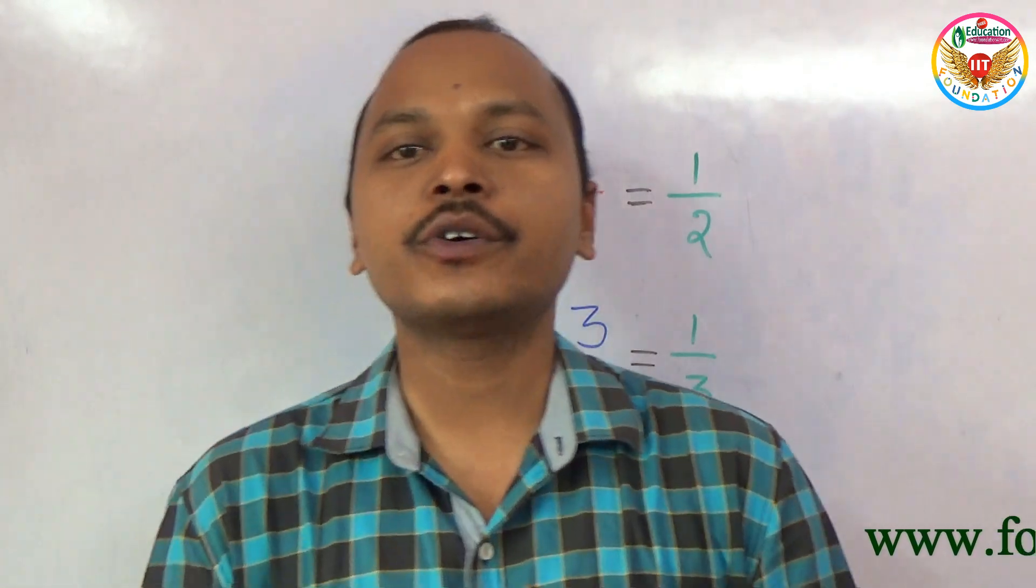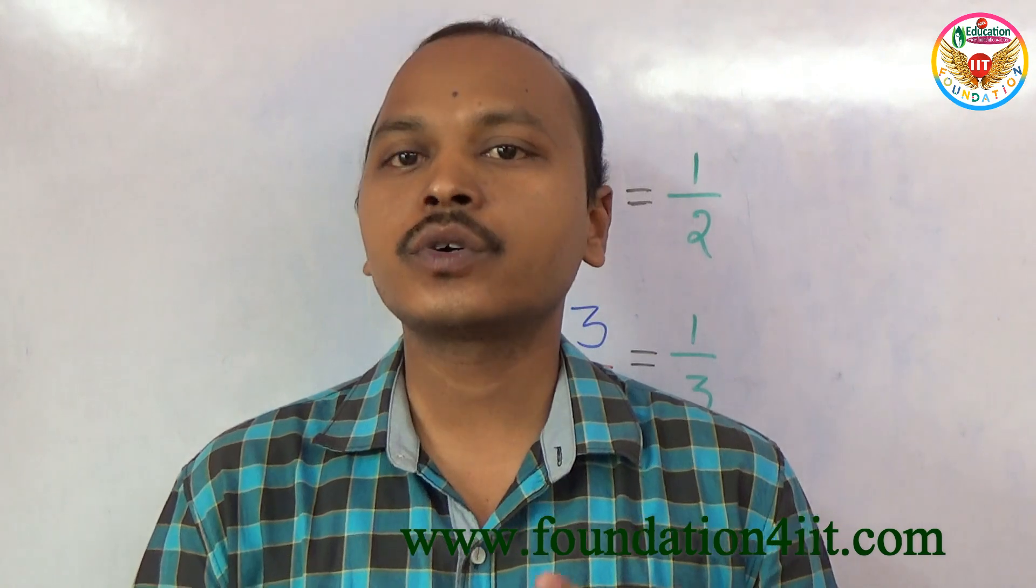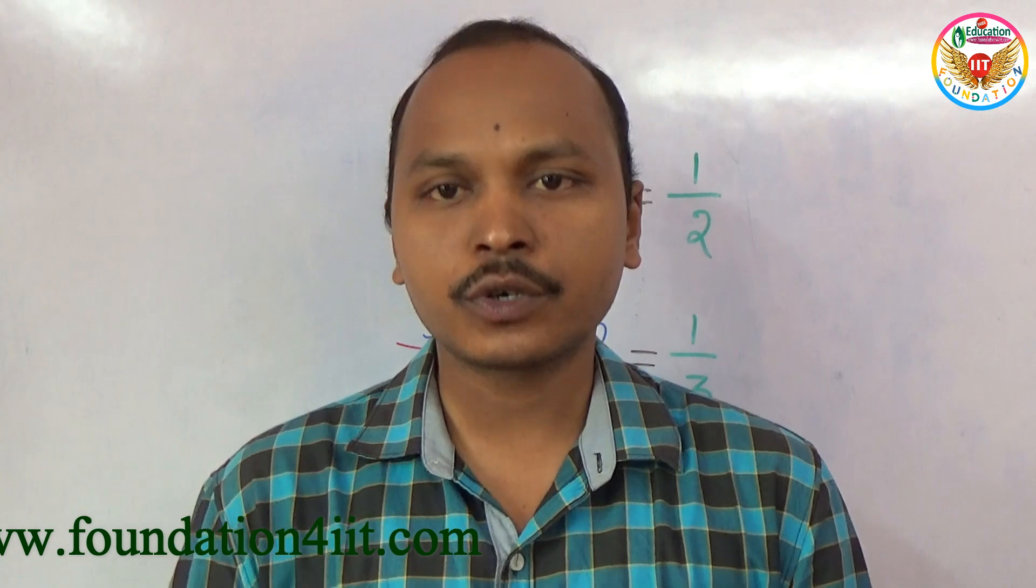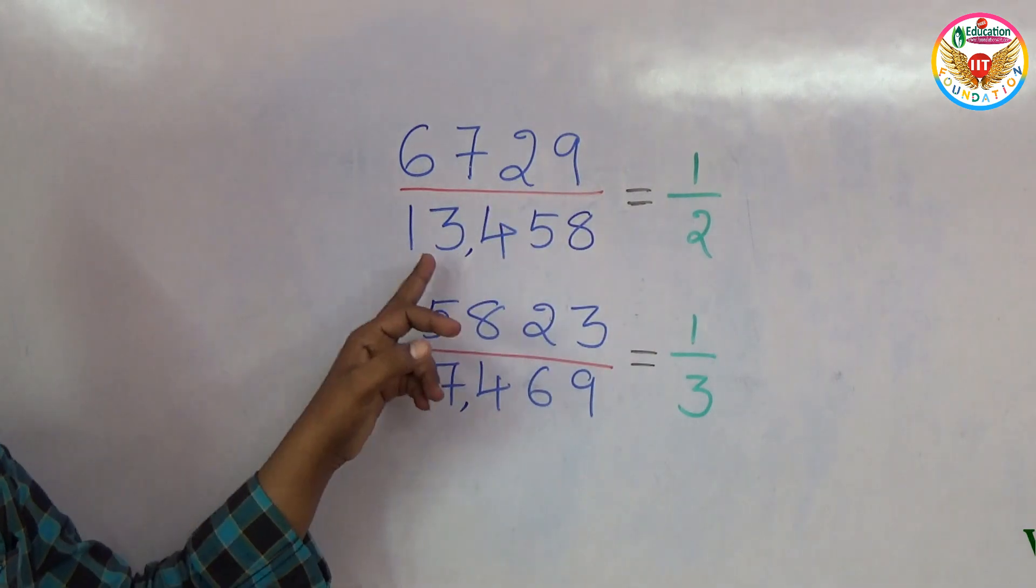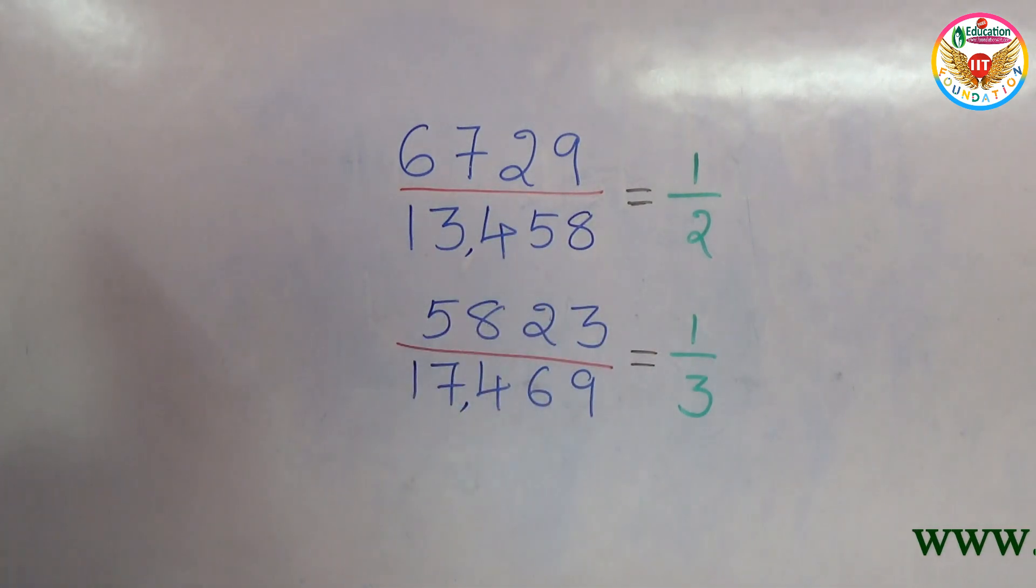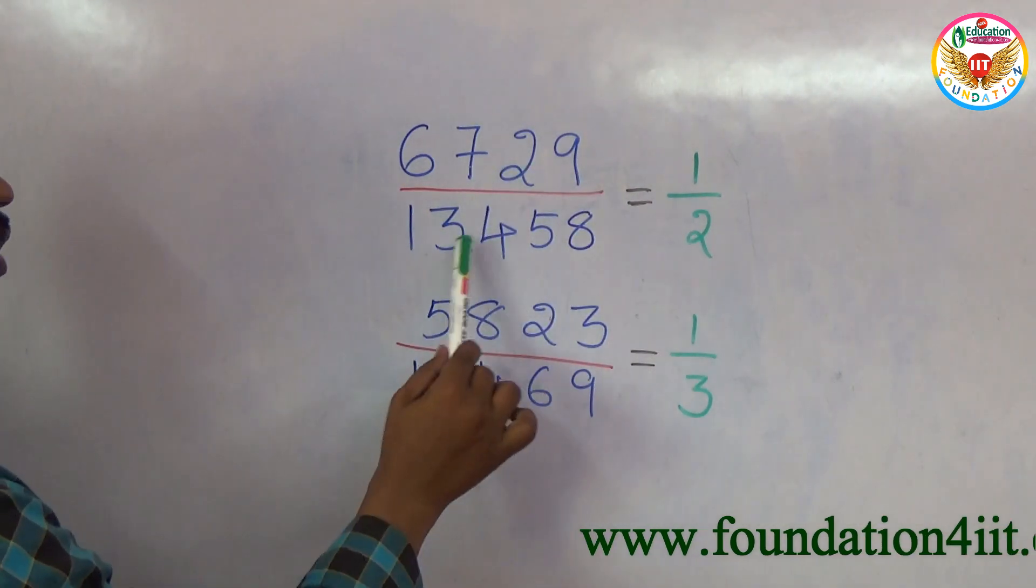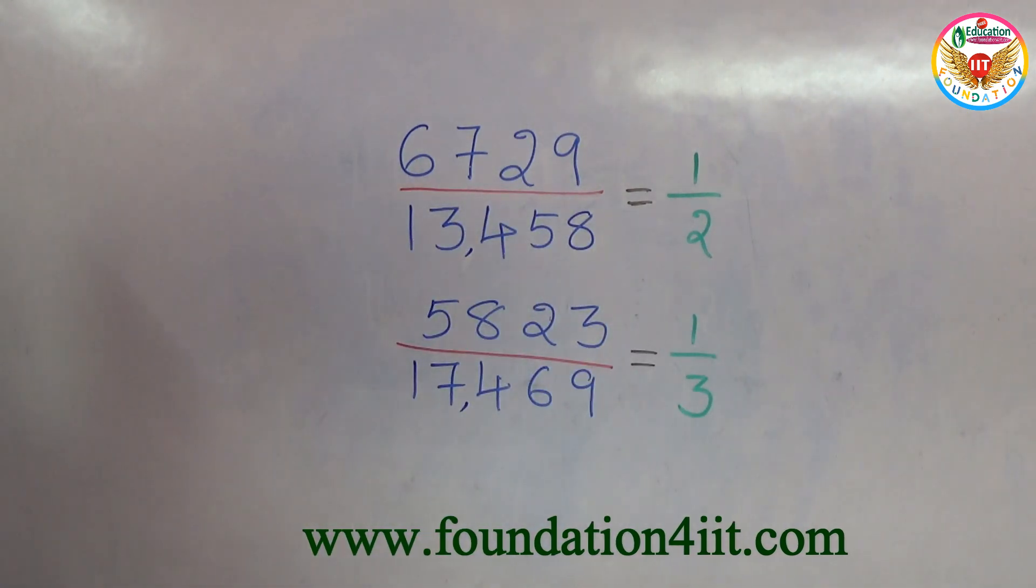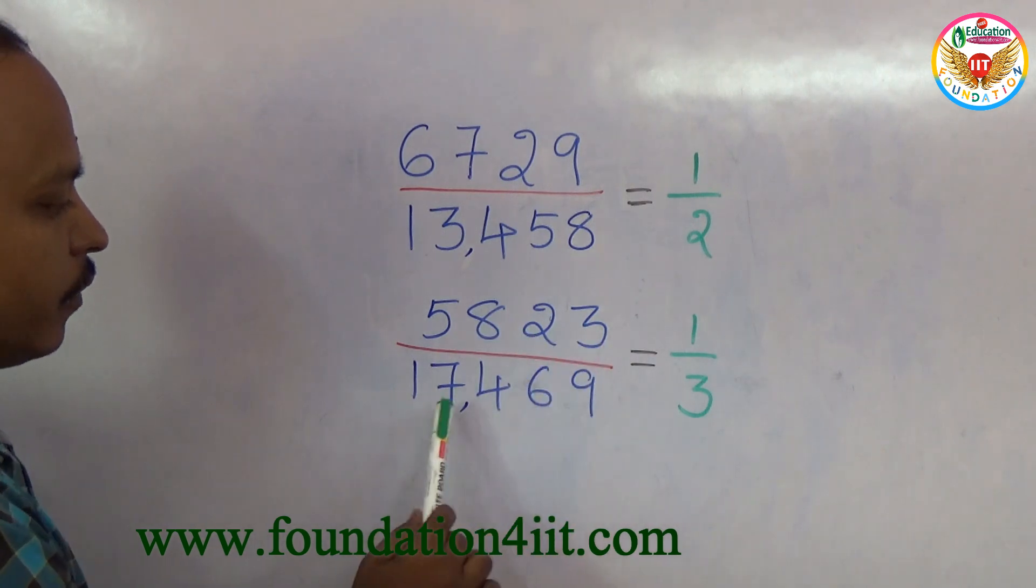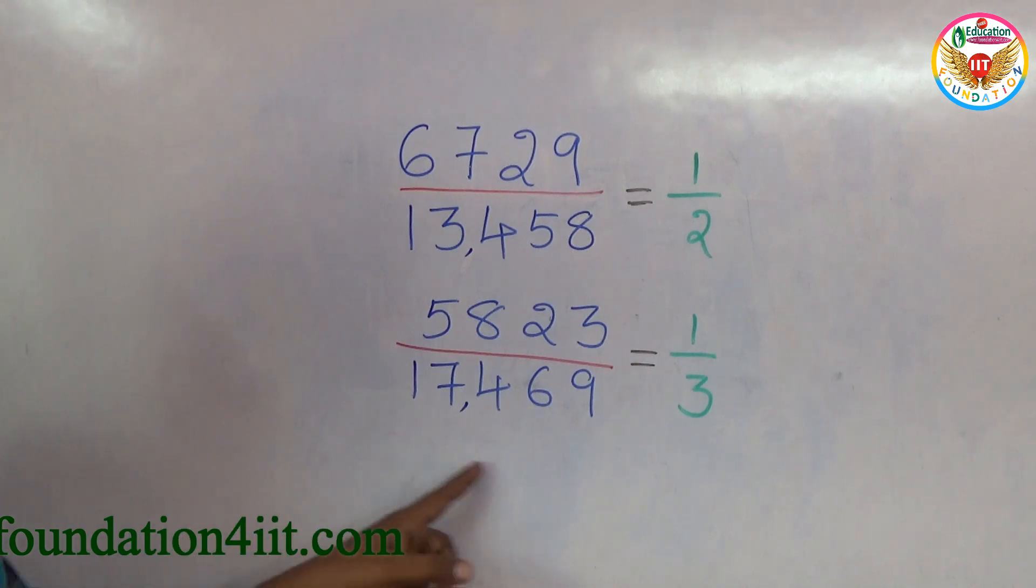Welcome to education channel. In this video I will show some tricks with numbers using 1 to 9 digits. Can you make the fractions 1/2, 1/3, 1/4, and so on? I showed two results here. You can observe 6729 divided by 13458. In this division every number is used 1 to 9 without repeating. This value is exactly equal to 1/2. Similarly, 5823 divided by 17469 is 1/3, also applying 1 to 9 digits without repeating.